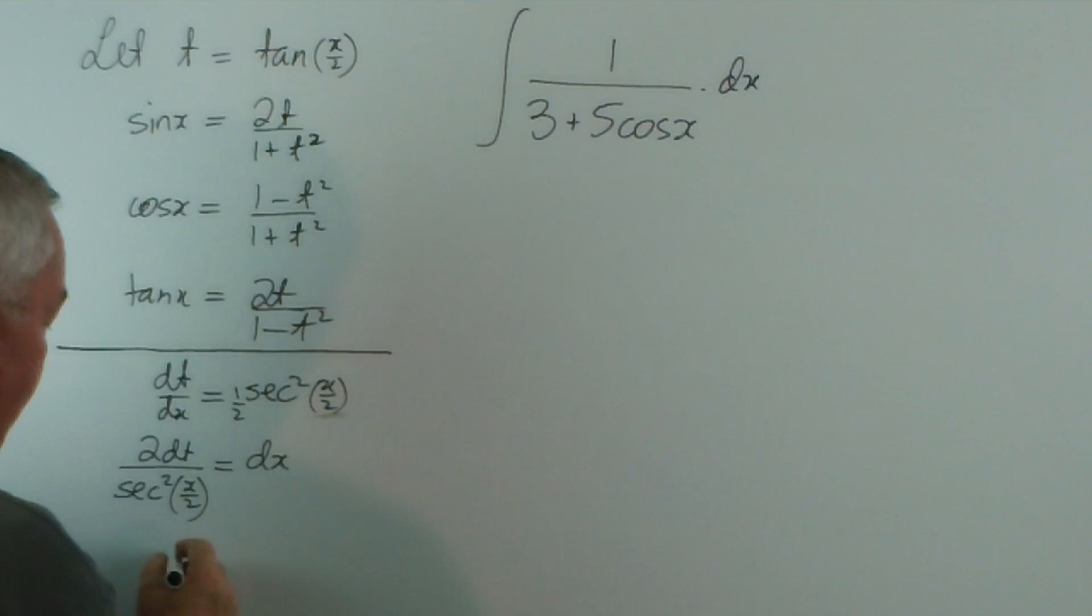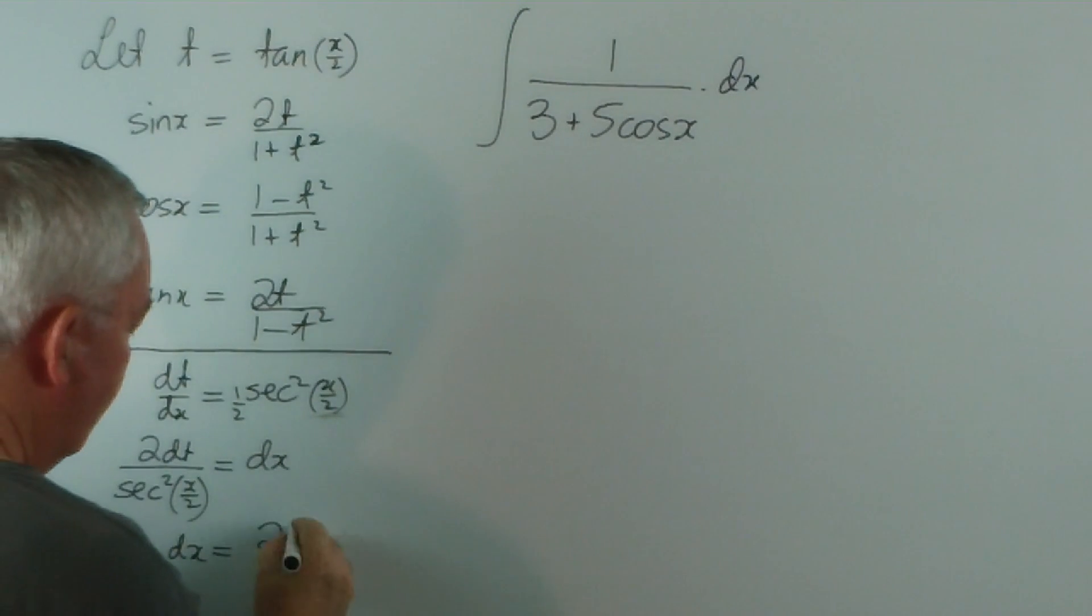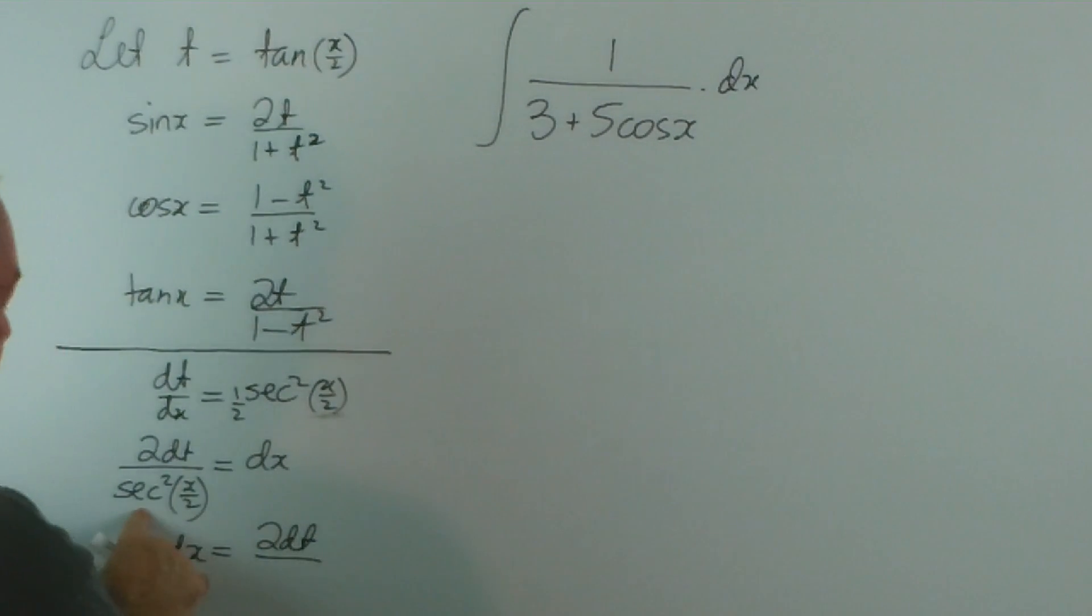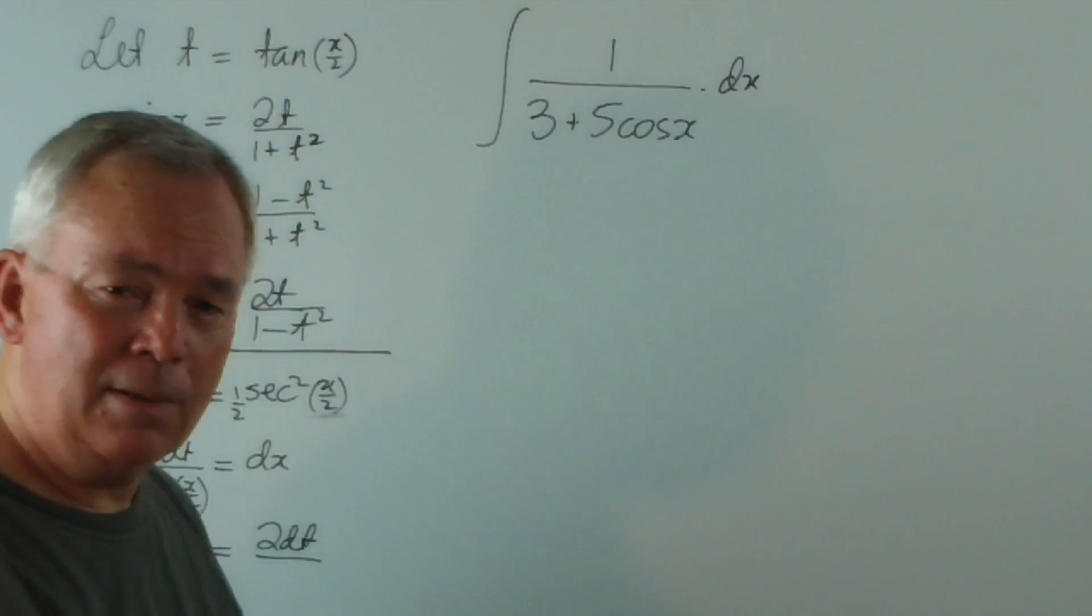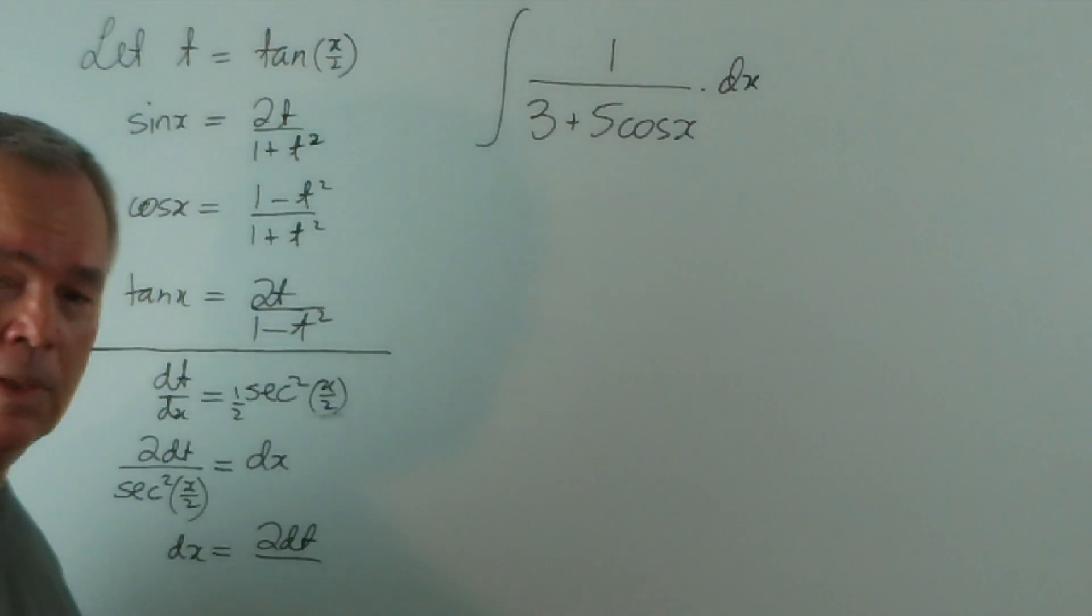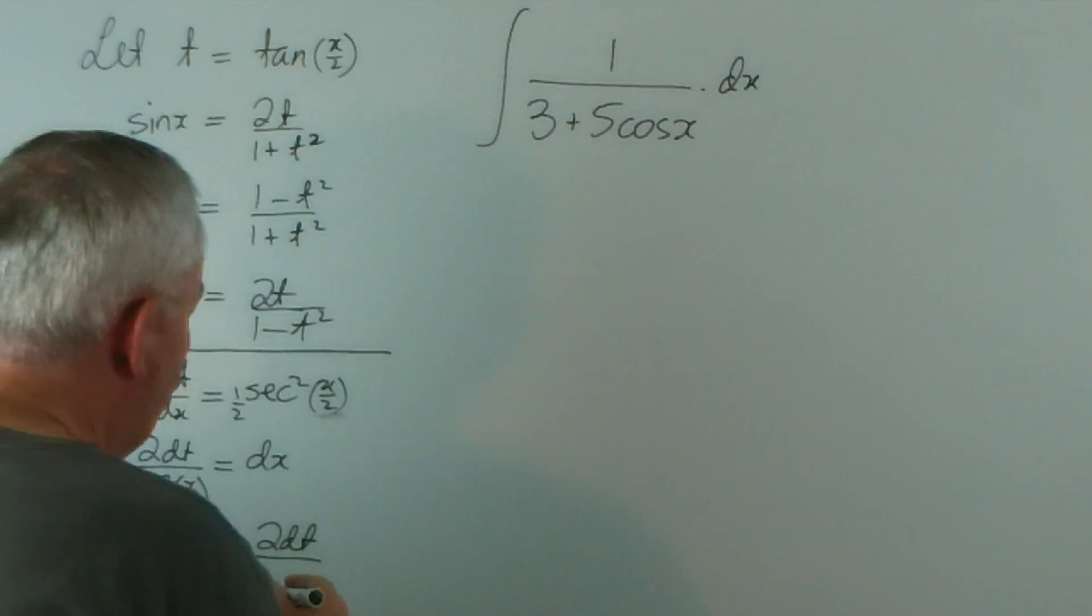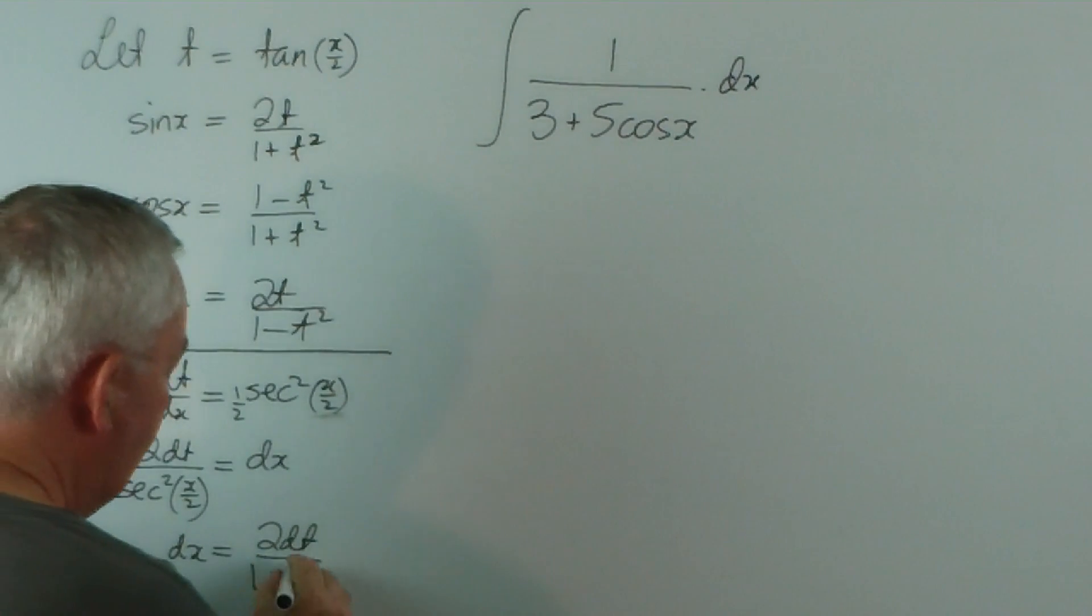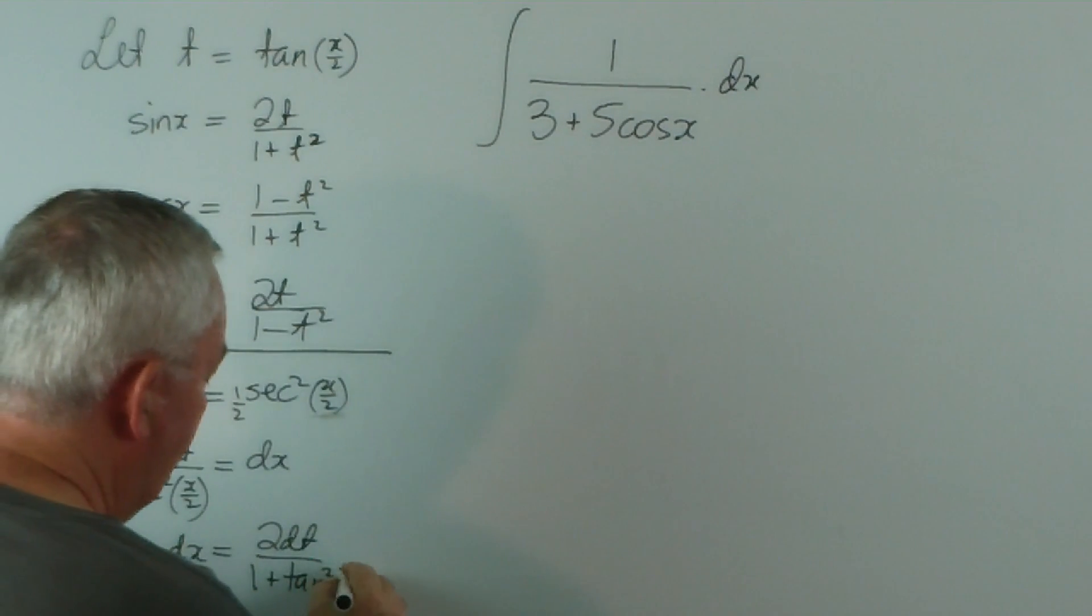And I want you to notice that this means that dx is 2 dt over sec squared x/2. And as soon as we have an identity for that, here we have a square of a secant, sec squared x/2 is the same as 1 plus tan squared x/2.